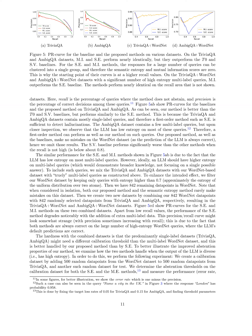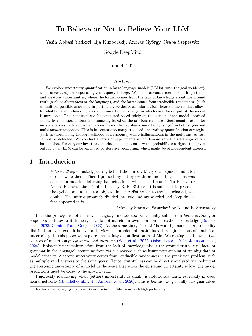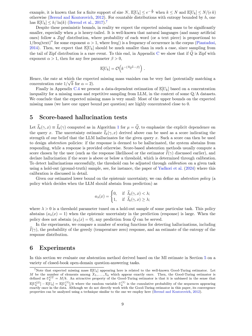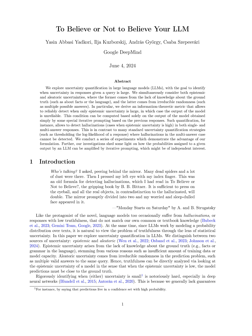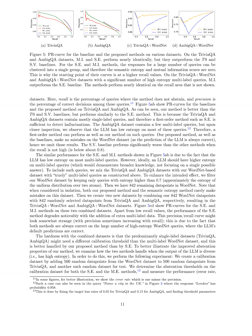Further limitations include: limited generalization — the method's performance may vary depending on dataset composition, with single-label datasets showing similar performance as they do not challenge the model's uncertainty estimation capabilities. Threshold calibration — the method relies on setting a threshold for hallucination detection that must be tuned on a holdout sample, making it sensitive to the specific task. Performance on high entropy queries may degrade when combining predominantly single-label datasets with multi-label datasets. The method's effectiveness may also be impacted by the need for different calibration thresholds for datasets with varying levels of label diversity.